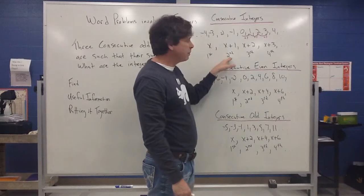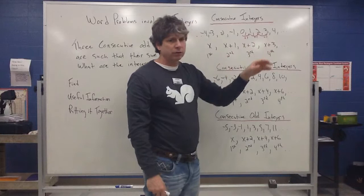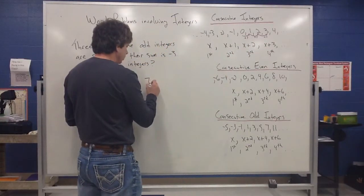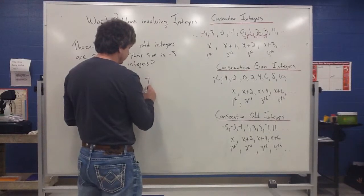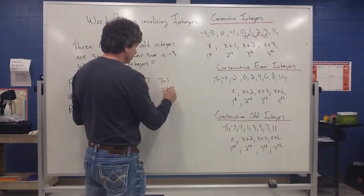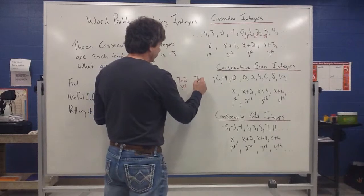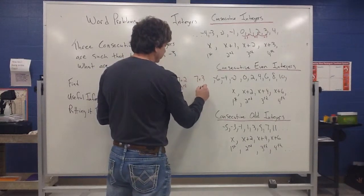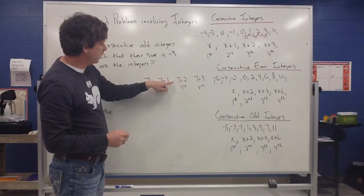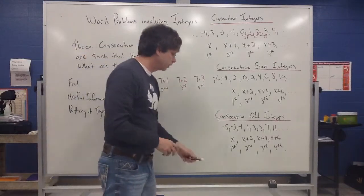The fourth integer is going to be 3 more than the first integer. So if you add 1, that gets you to the next integer. If you add 2, that gets you to the third. If you add 3, that gets you to the fourth. For instance, if 7 is the first integer, then 7 plus 1 is the second, 7 plus 2 is the third, and 7 plus 3 is the fourth — giving us 7, 8, 9, 10. This is how we represent consecutive integers.